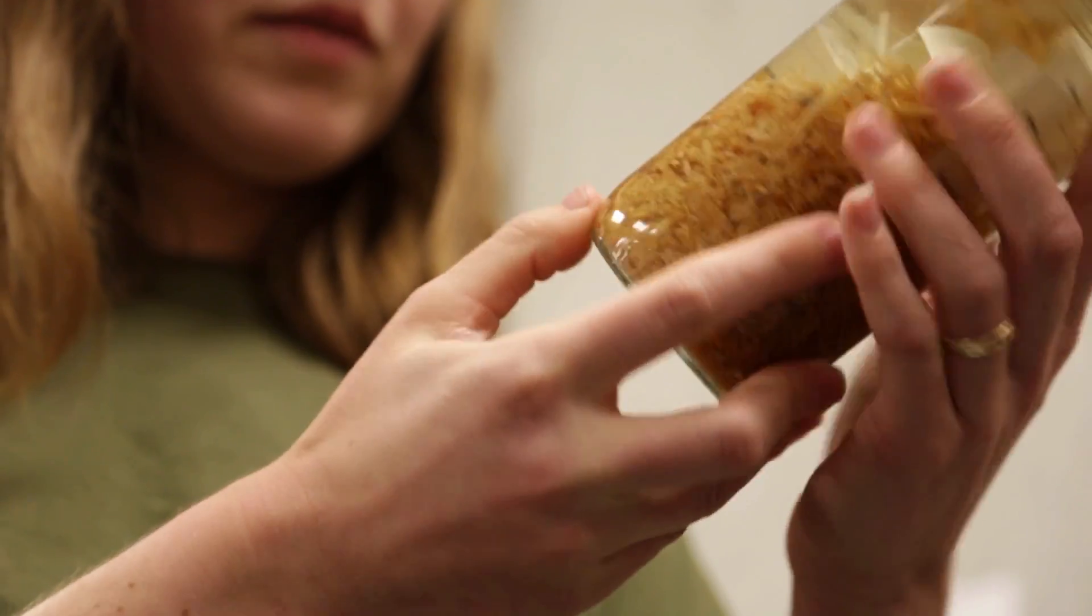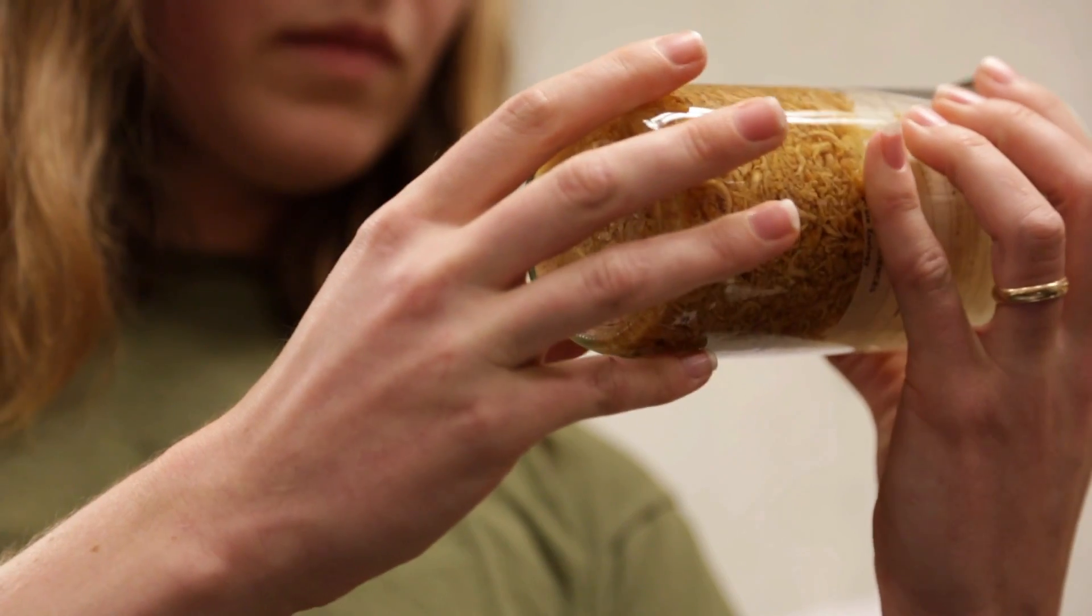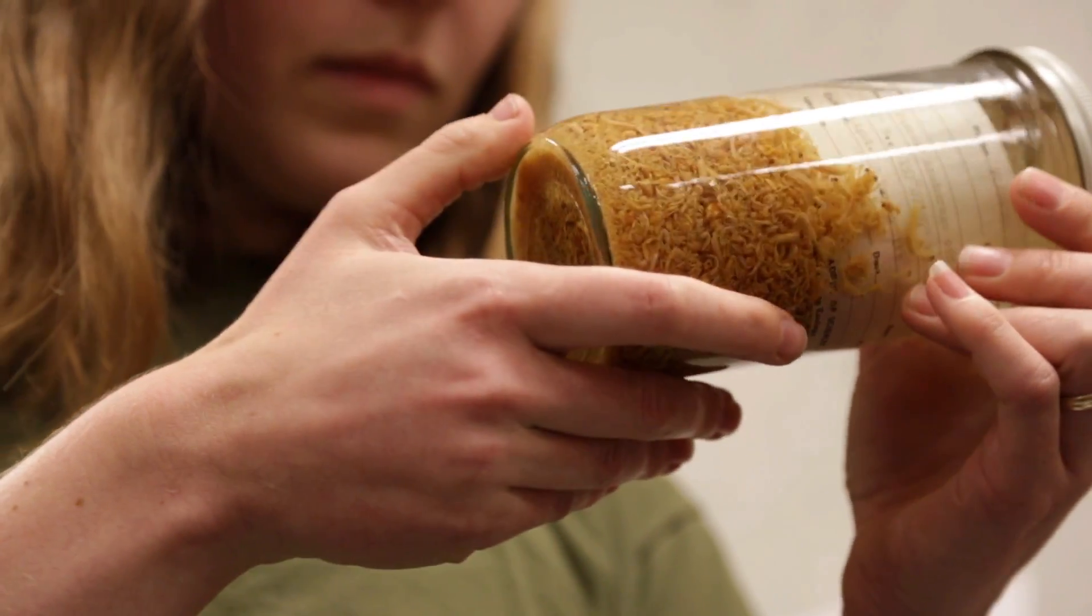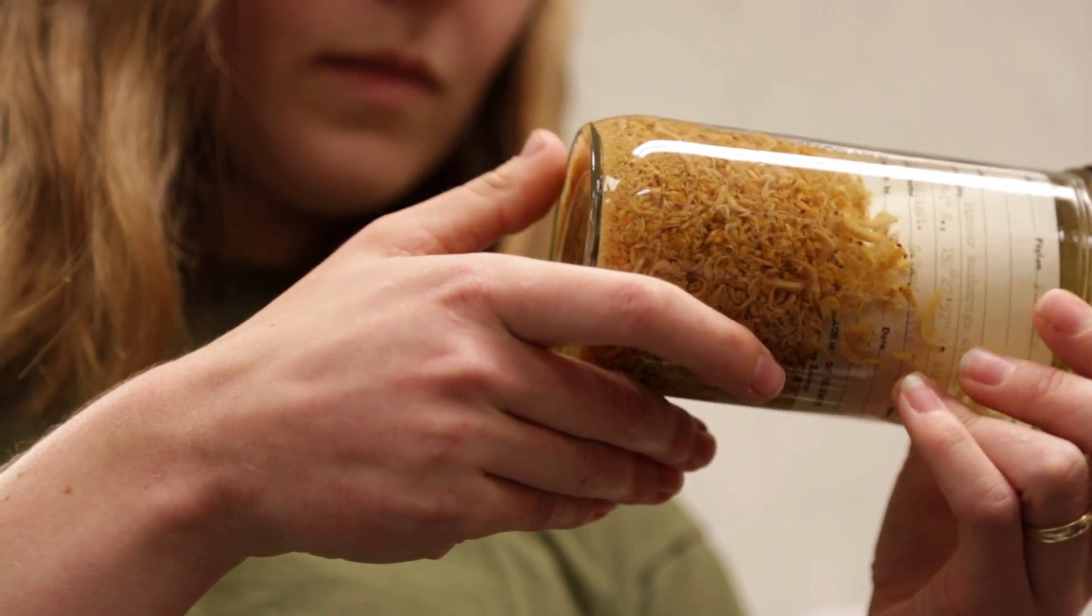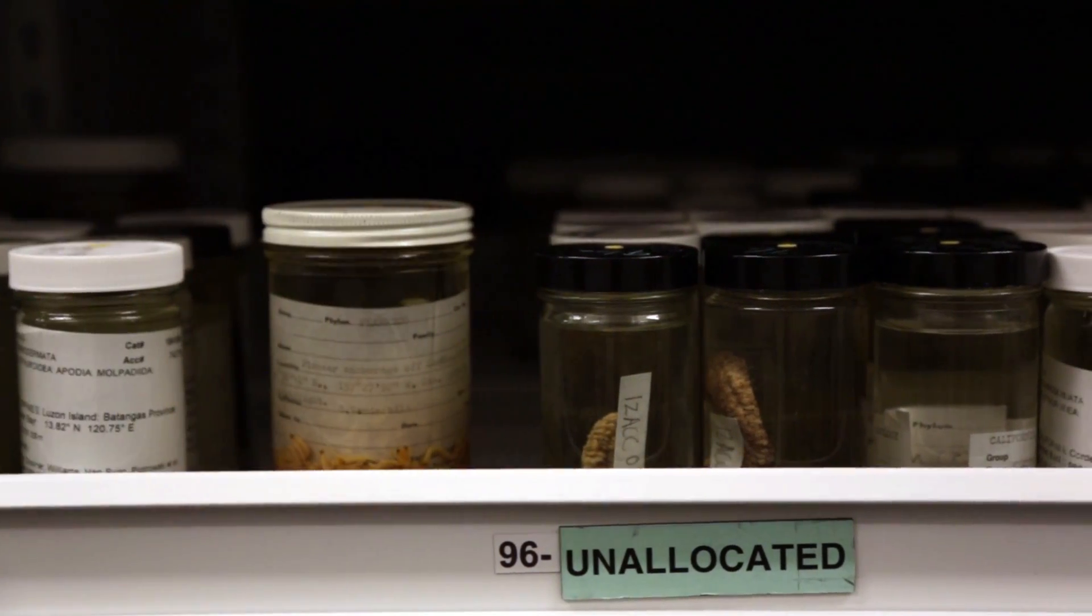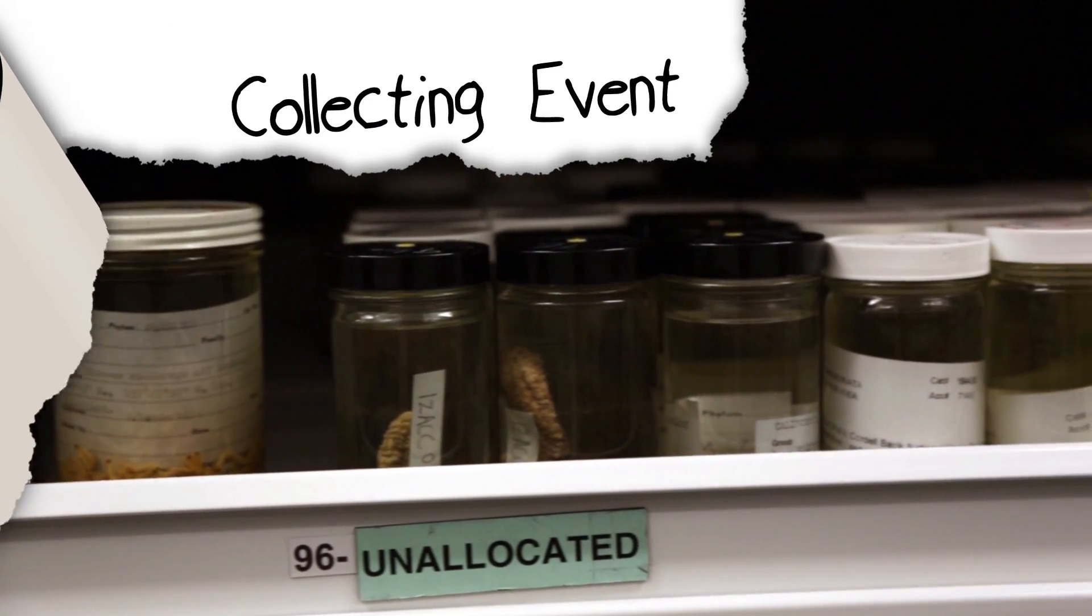It will still be useful to somebody later because, as usual, you have the locality data associated with that jar. A plankton specialist could still separate some individuals from the lot, but with that catalog number in place, we can always trace the data concerning the collecting event.